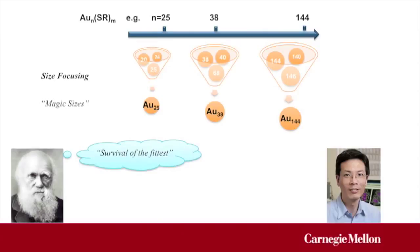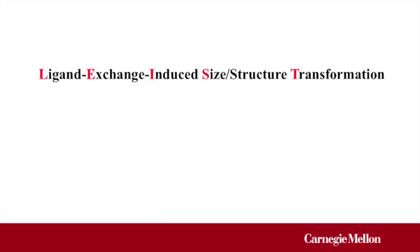The most important finding discussed in the current perspective paper is ligand exchange induced size and structure transformation reaction. We call it the LEIST reaction for short. In a typical LEIST reaction, a magic-sized cluster can be transformed into another stable size by changing the surface ligands.